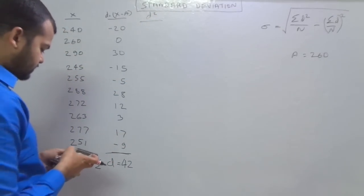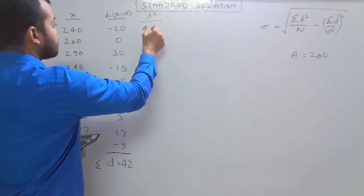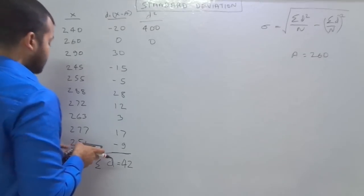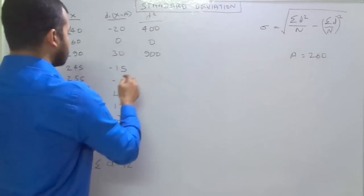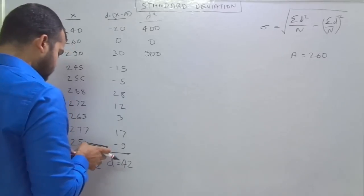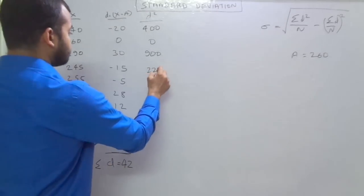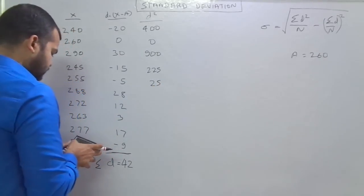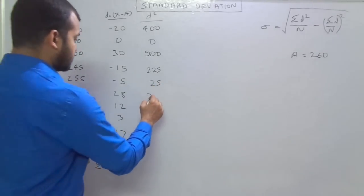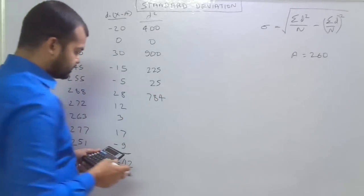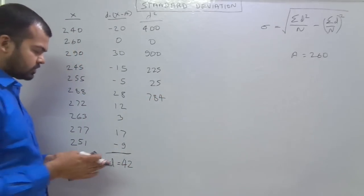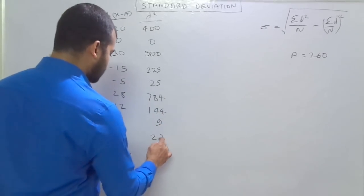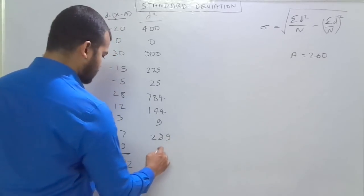20 into 20, that is 400. 0. 30 into 30 is 900. 15 into 15, that is 225. 5 into 5 is 25. 28 into 28 is 784. 12 into 12 is 144. That is 9. That is 289. And 9×9 is 81.